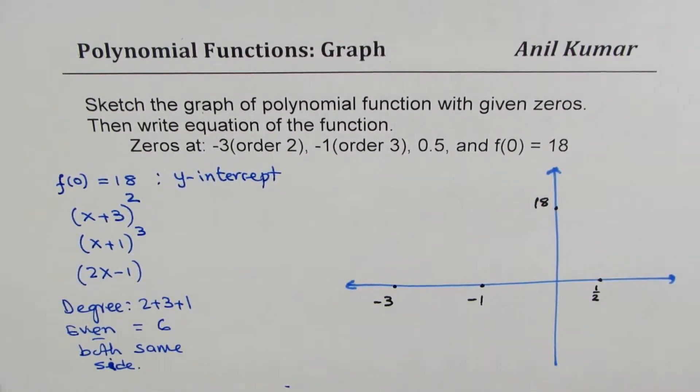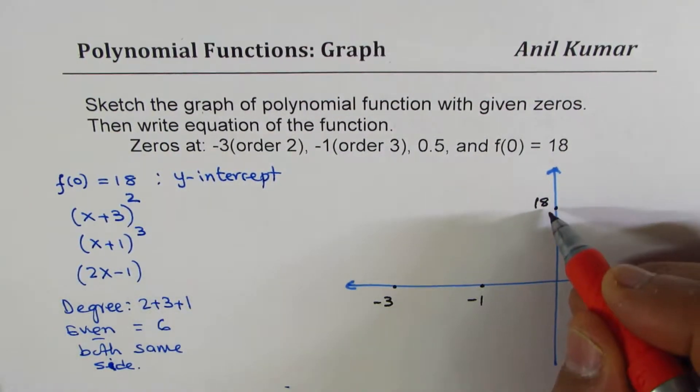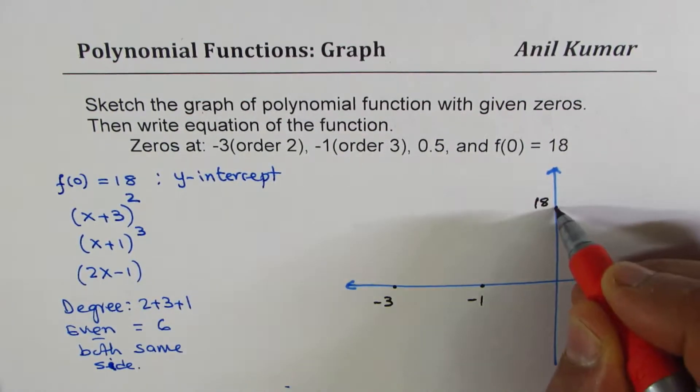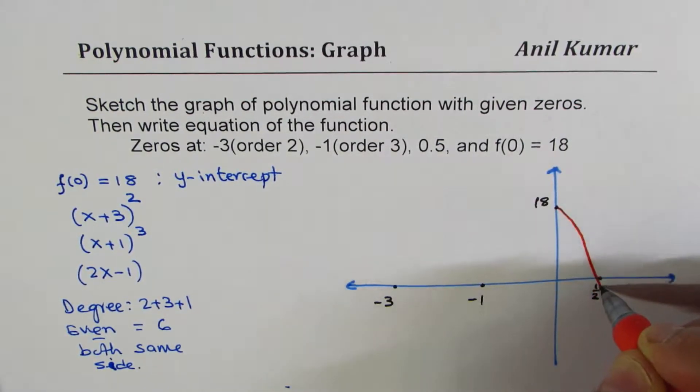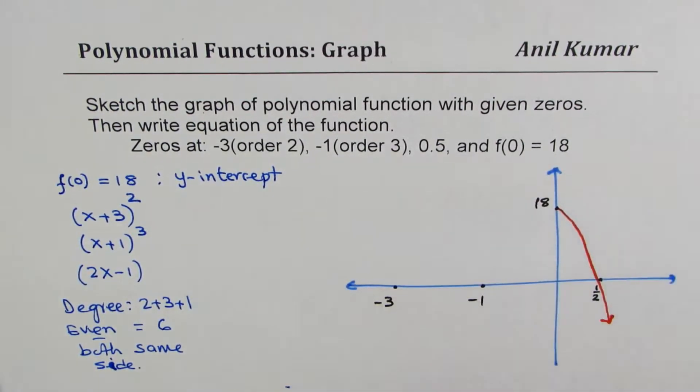Now, the zero at half is linear. So, from the y-intercept, it is going straight down. So, from the y-intercept, the graph actually goes straight down. Now, since we have even degree means both same side, that means it has to begin from somewhere here.